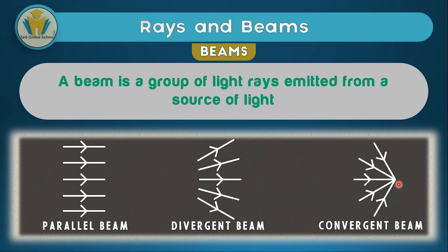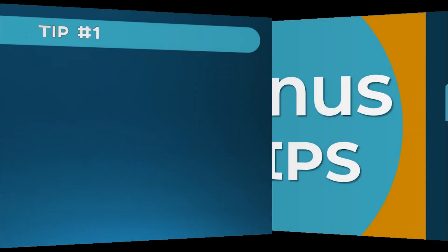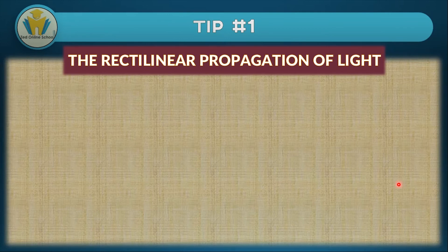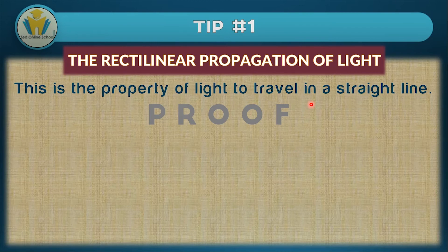We have roughly introduced light to you. Now for some bonus tips. The first tip is about the rectilinear propagation of light — this is the property of light to travel in a straight line. If you look up the definitions of 'rectilinear' and 'propagation,' you'll find these two words mean exactly that: the property of something to travel in a straight line. You might wonder if this is really true — yes, and you can actually prove this from your home without a laboratory.